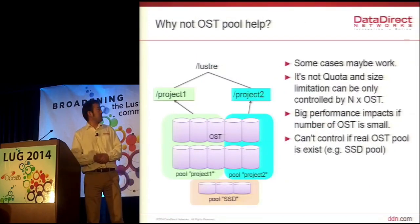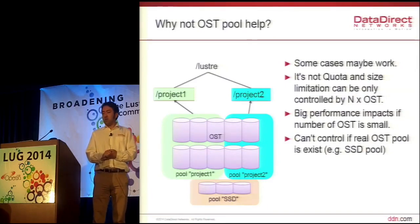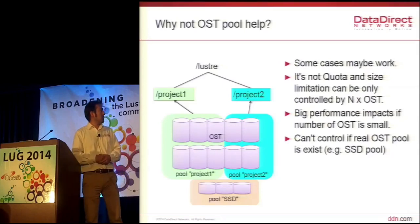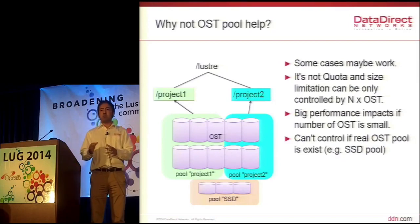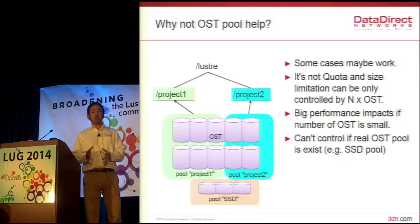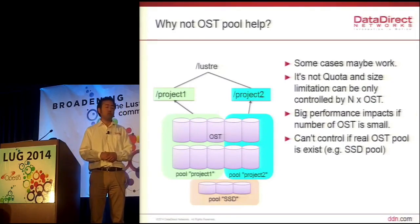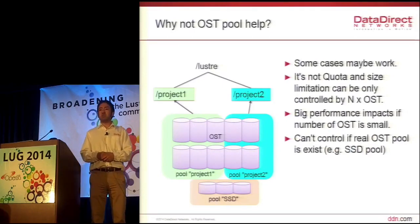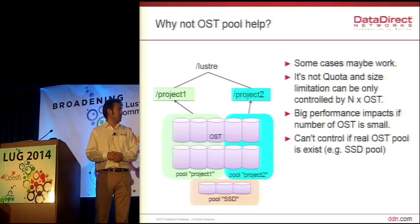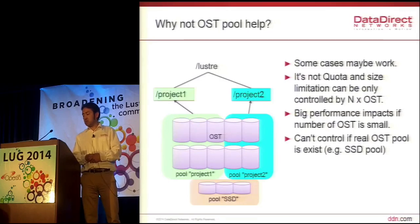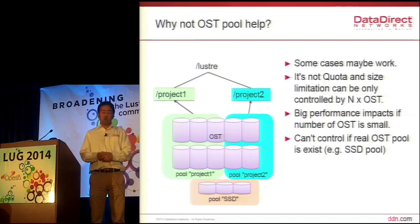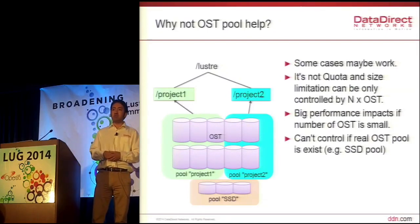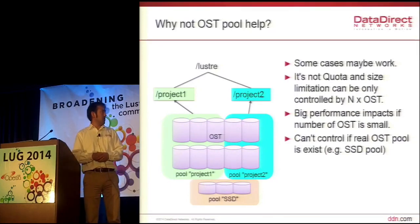Lustre has the OST pool, so why doesn't the OST pool help? If you create a specific OST pool with a number of OSTs and assign that pool to a specific directory for a project, this is not really a quota. The size limitation only happens by the number of OSTs times the OST size. Also, if the number of OSTs in a pool is small, there's a significant performance impact. And if you have a real SSD pool, you cannot control the size per project.